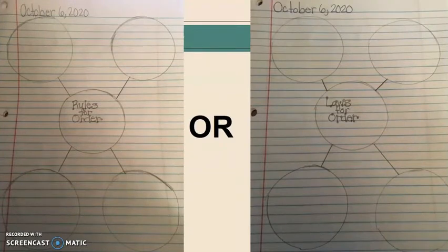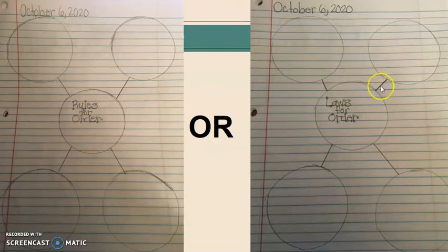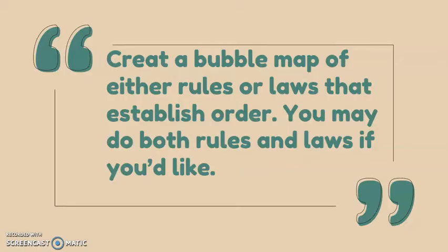You will create a bubble map of rules for order or laws for order. In each bubble, you will create a sentence or an illustration that shows rules for order or laws for order. Create a bubble map of either rules or laws that establish order. You may do both rules and laws if you like.